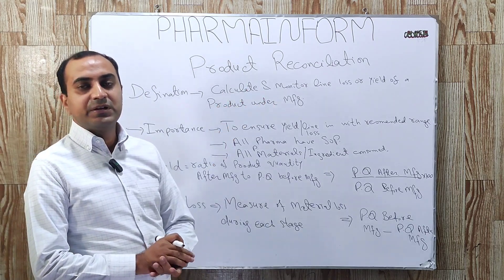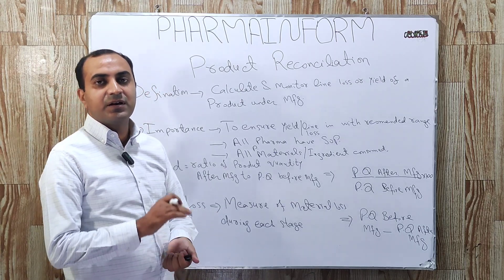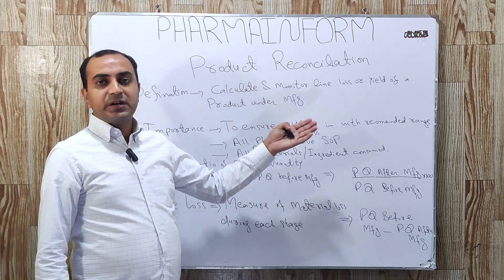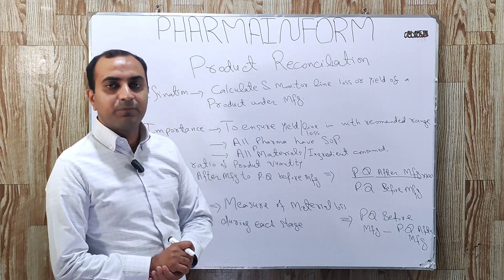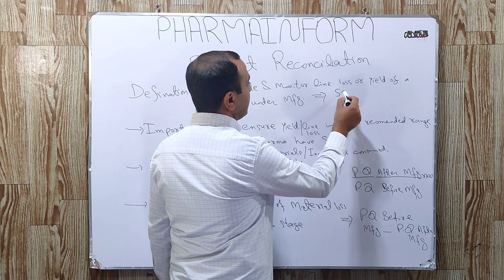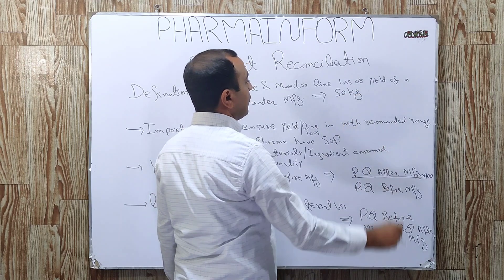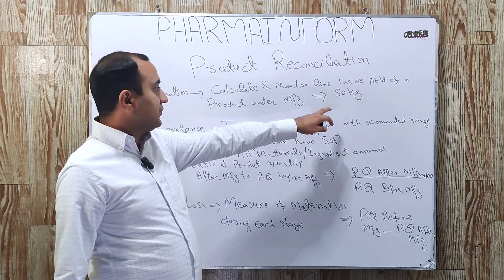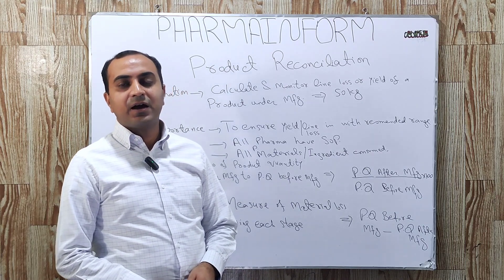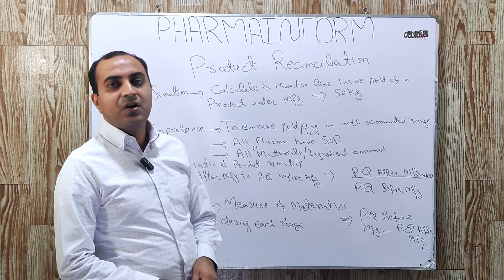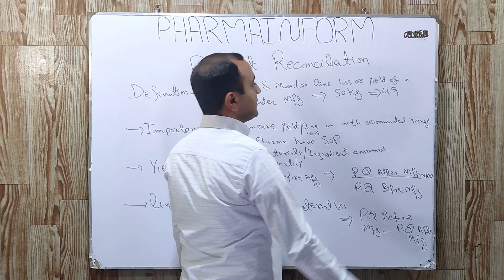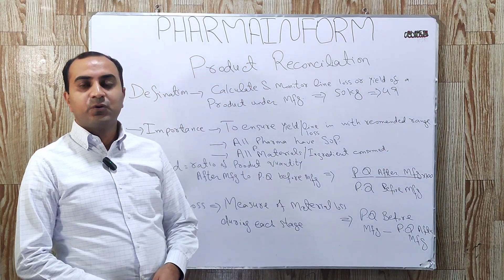Now we will take a practical example for product reconciliation. If you are working in a pharmaceutical industry in the tablet manufacturing area, how will you reconciliate your product for granulation and compression? Suppose you have a batch for granulation and the standard quantity before manufacturing is 50 kilograms. You perform wet granulation, and after drying, dry sieving, and final blending, the product obtained is 49 kg.